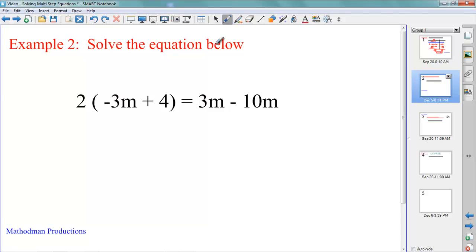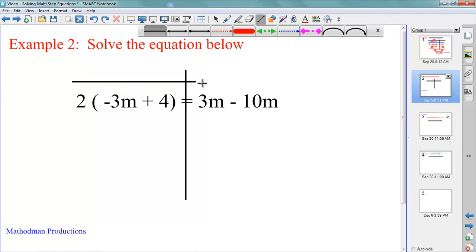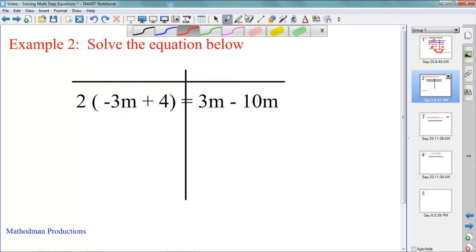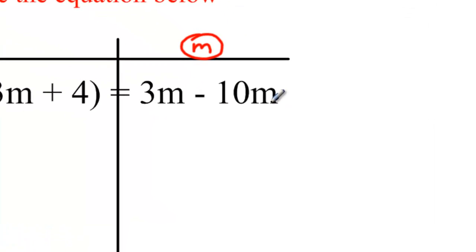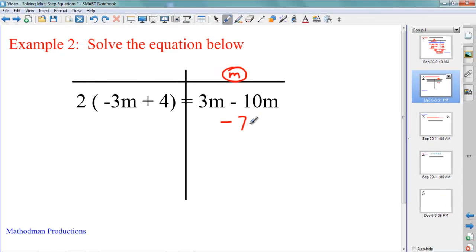Example 2. Once again, and I'm getting a little repetitive here. Check both sides to make sure that you can simplify anything before you start the problem. Taking a look at it. There's M's on both sides. So I'm just going to start this way because there's more M's on the right. 3M minus 10M. Is there any way that I can make that shorter? Well, they both have M's on it so you can probably combine like terms. 3M minus 10M is just a negative 7M.